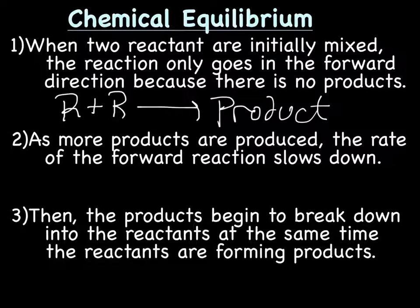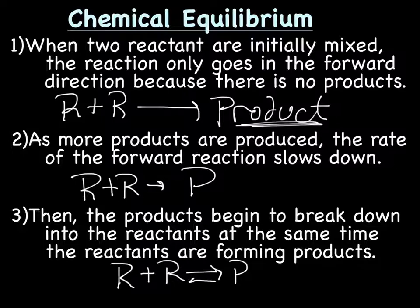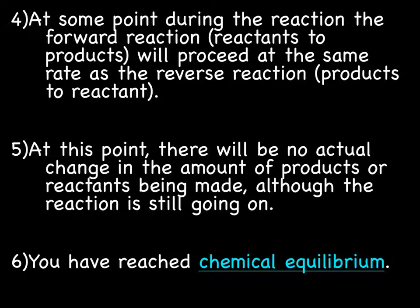As more products are produced, the rate of the forward reaction slows down. As you start making more and more product, the reaction slows down. At a certain point, reactants are still producing product, but at the same time, products start going back and breaking apart into reactants. At some point, the forward reaction — going from reactants to products — will proceed at the same rate as the reverse reaction going from products back to reactants.